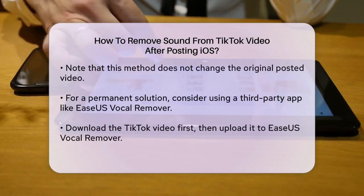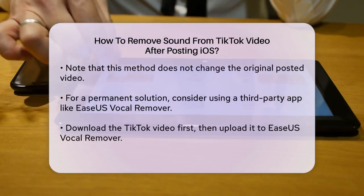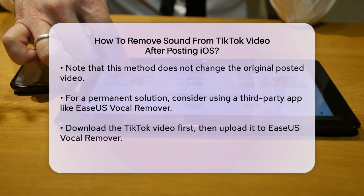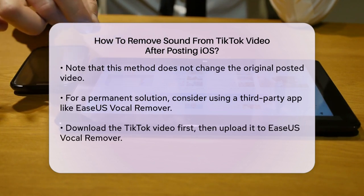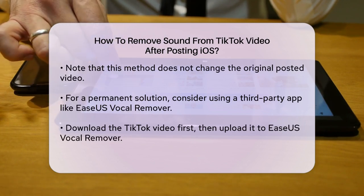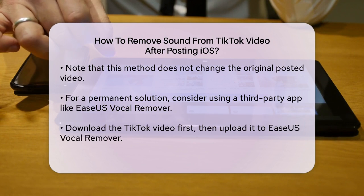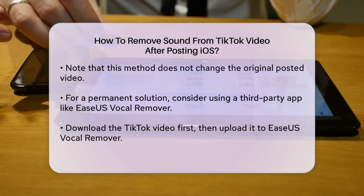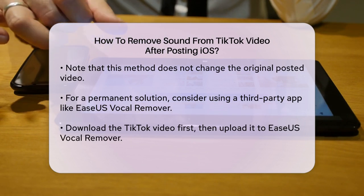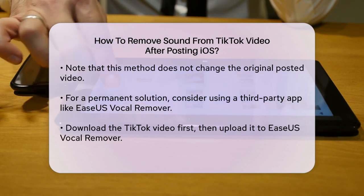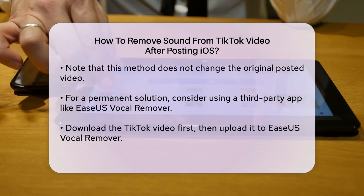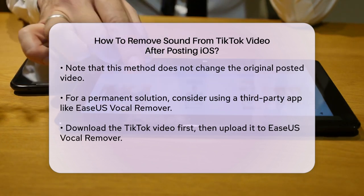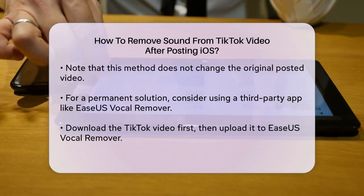To use EaseUS Vocal Remover, you'll need to download the video from TikTok first. Once you have the video, go to the EaseUS Vocal Remover website and upload your video. Use the Volume and Speed and Pitch Changer tool to adjust the volume slider to the left until it's zero, effectively muting the sound. Then save and export the video.